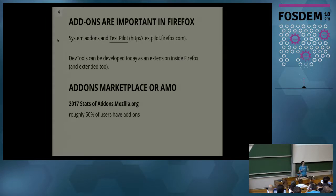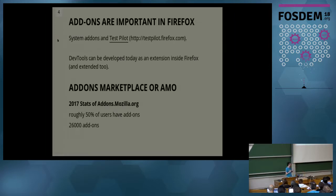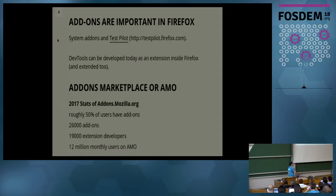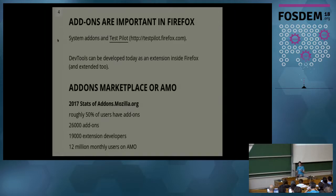Let's start with a few numbers. Half of Firefox users have at least one add-on, which means we have a marketplace with a lot of users. In AMO we have 26,000 add-ons — a lot of add-ons. We have also a lot of developers: 9,000 developers. And another very important point is 12 million monthly users on AMO. This means that when we release an extension, we can reach a huge number of users as customers, because there are a lot of services that do extensions too.